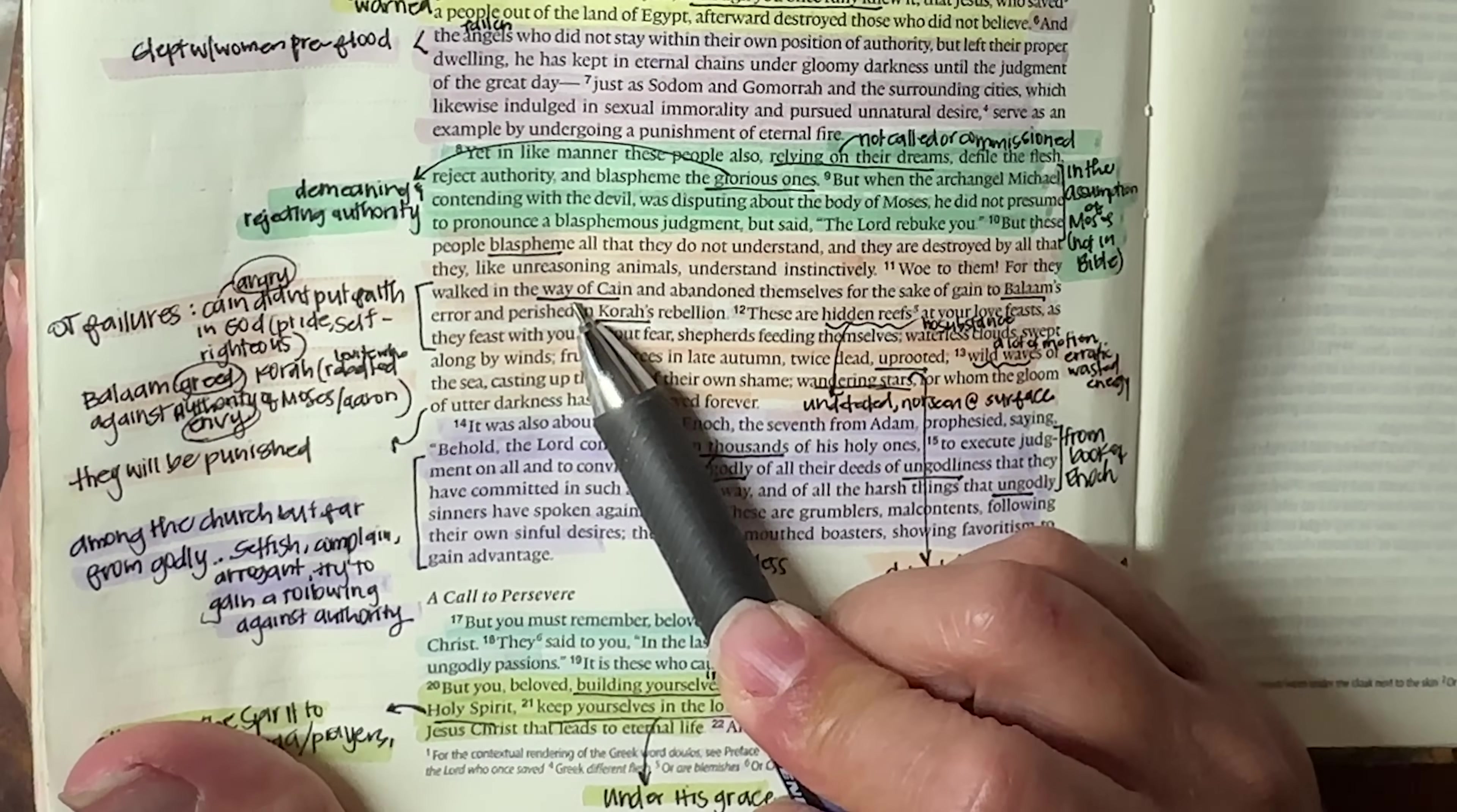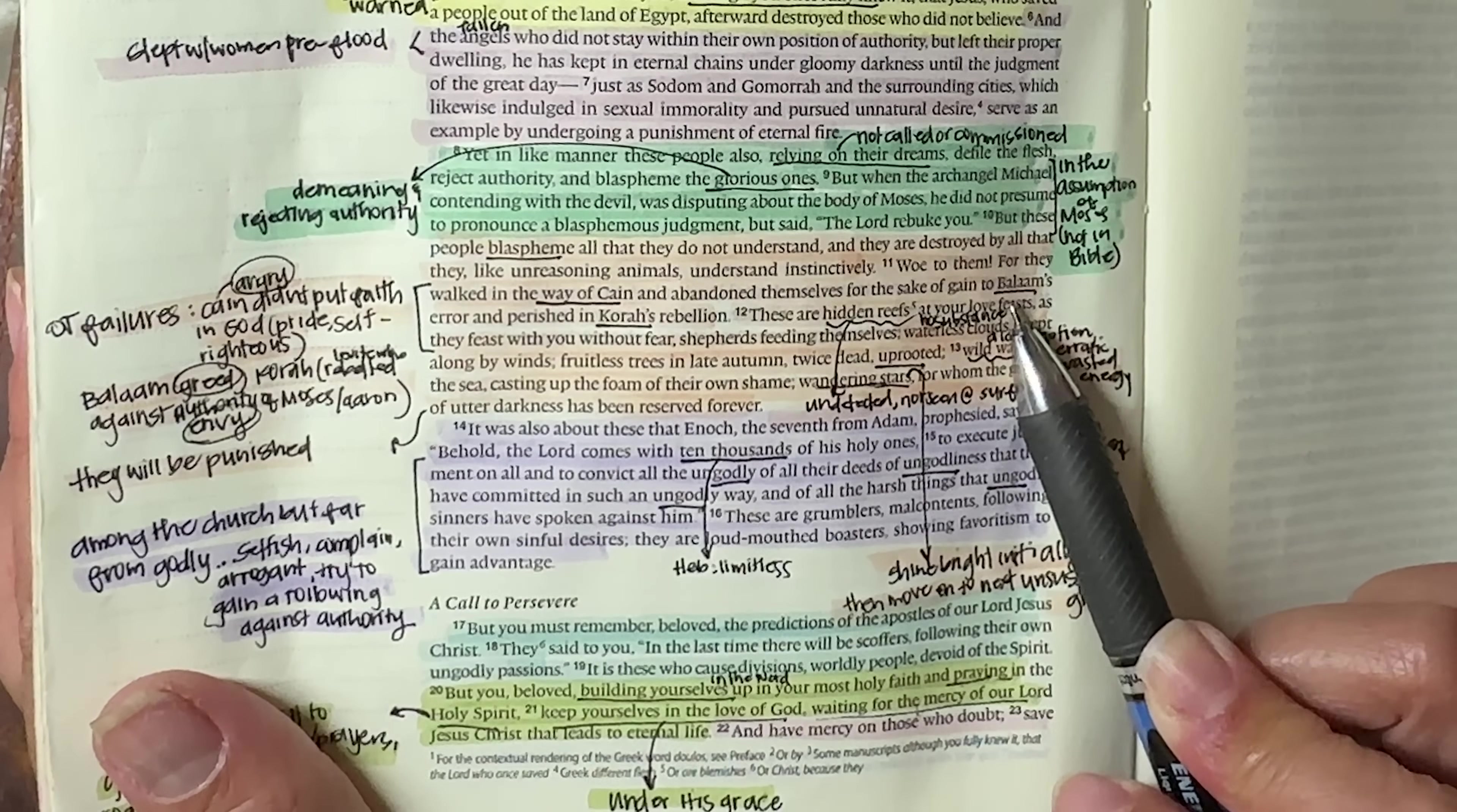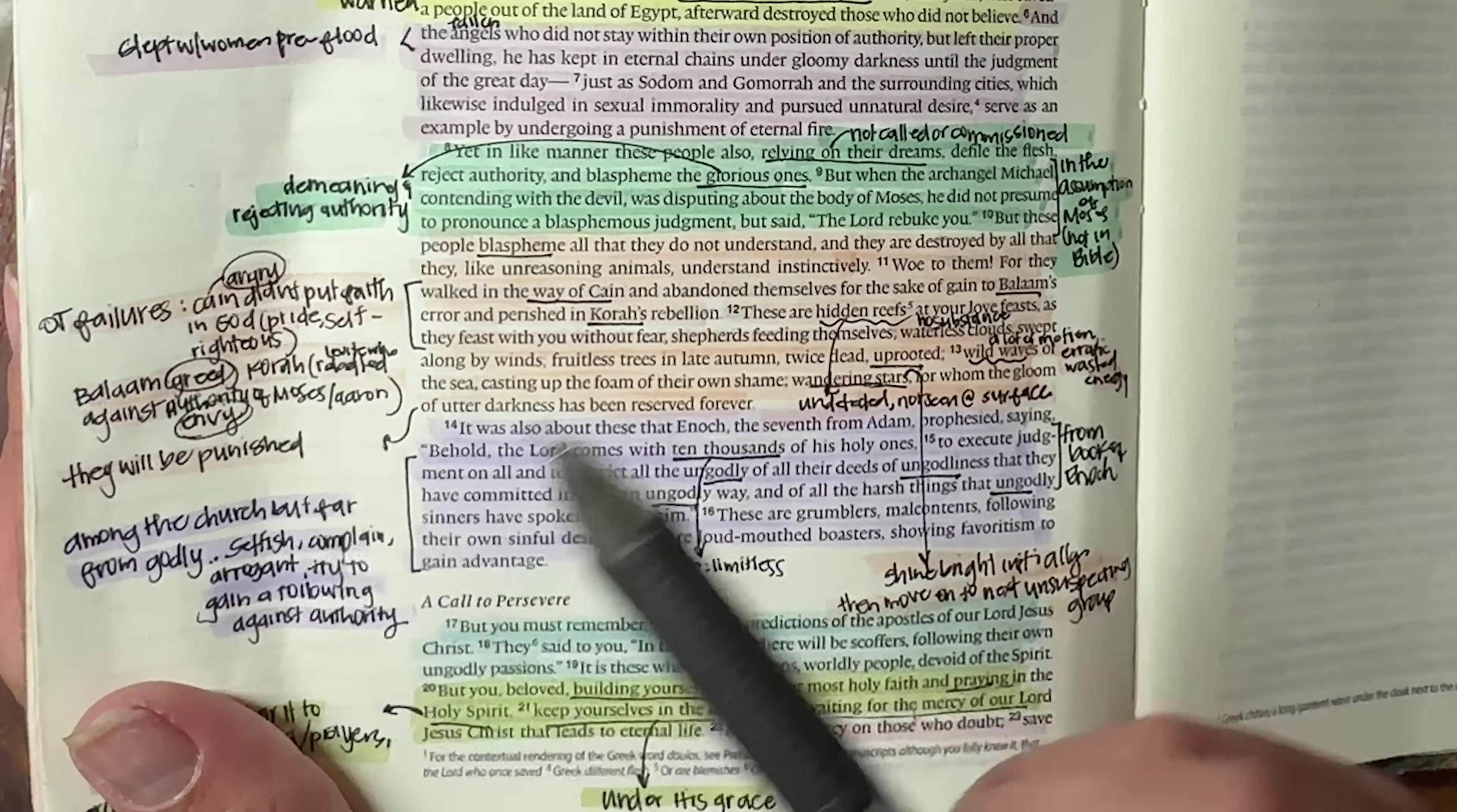So let's just stop here for a moment on these three figures here. Cain, who acted out of his own anger, didn't put his faith in God, but instead was prideful and self-righteous. So that's one person. So anger, self-righteousness, and pride. Balaam, remember who sold out, was trying to get a prophet in order to curse Israel from Balak. And his major sin was actually greed or his failure was greed. And then there was Korah, who was a Levite who actually rebelled against Moses and Aaron's authority. And so he was like envious and jealous. So those are the things that you need to watch out for in these people. Anger, pride, self-righteousness, greed, envy, jealousy.